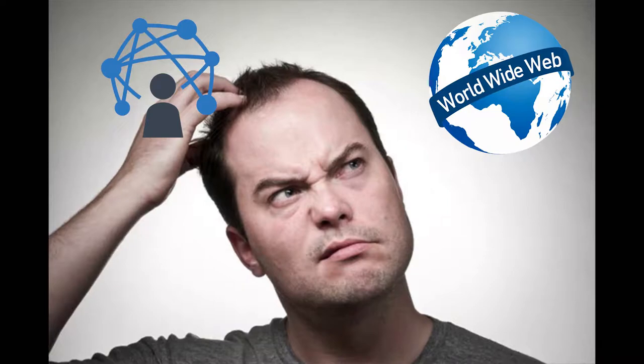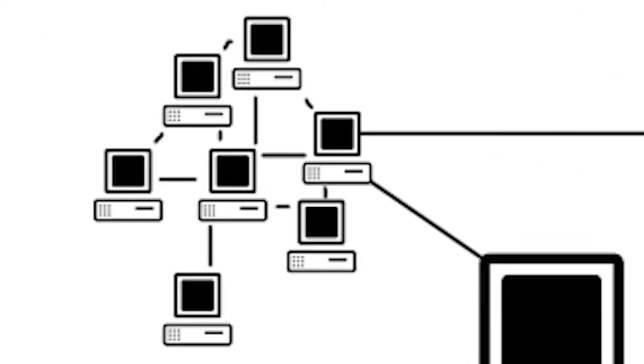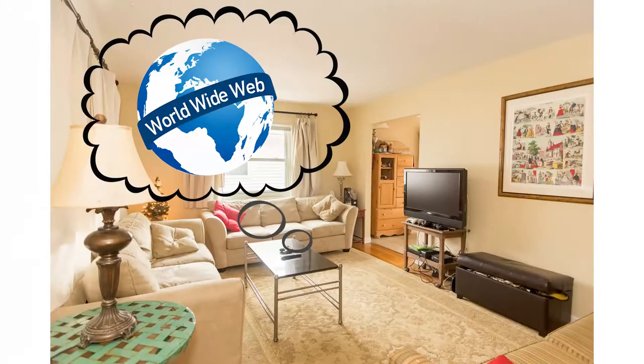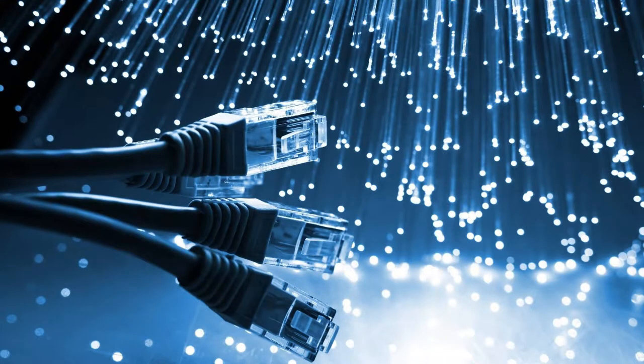Many people have trouble differentiating the internet and the World Wide Web. It basically comes down to this: the internet is the service that connects networks together, a so-called network of networks. The World Wide Web, on the other hand, was invented by Tim Berners-Lee as a program that allows users to easily access content on the internet and uses the internet to allow these transactions to happen.